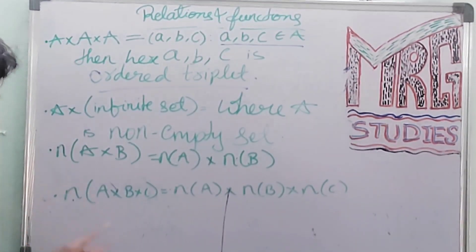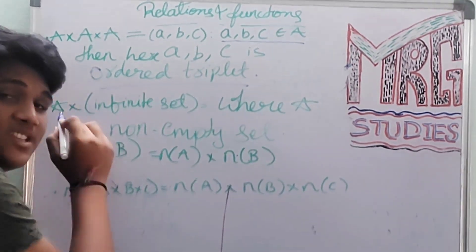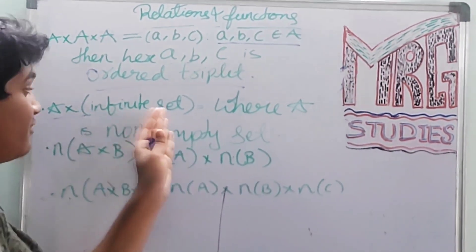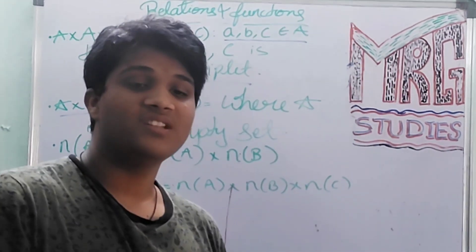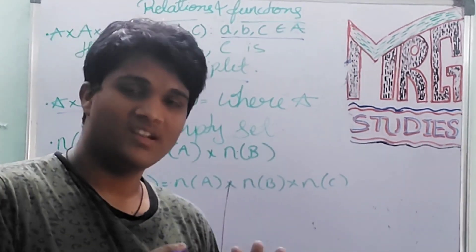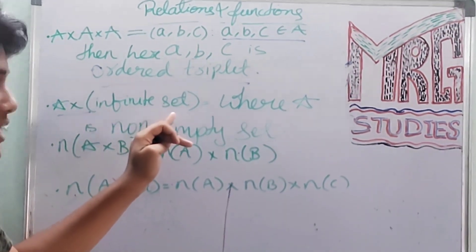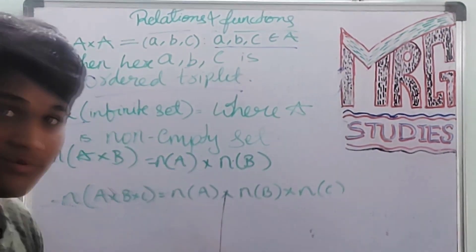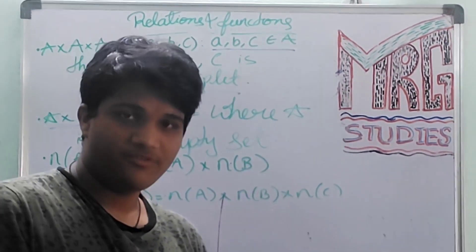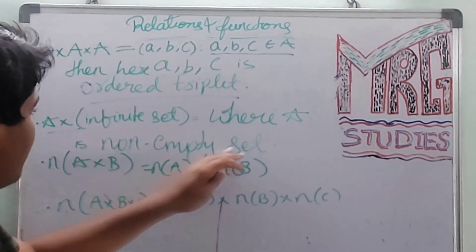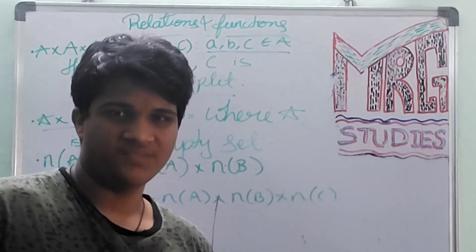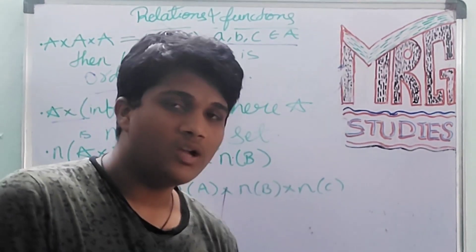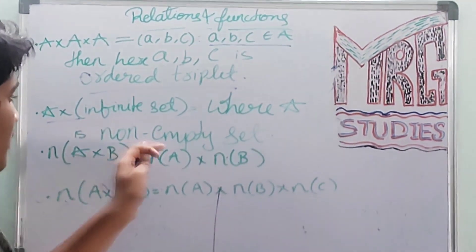Fourth point: if we multiply set A with an infinite set, then A will become a non-empty set. Because there are infinitely many pairs in that set, there will be infinite ordered pairs. So whenever set A is multiplied with an infinite set, the result is a non-empty infinite set.